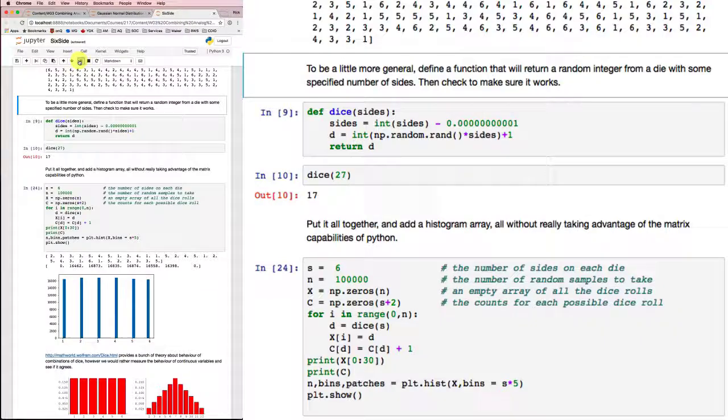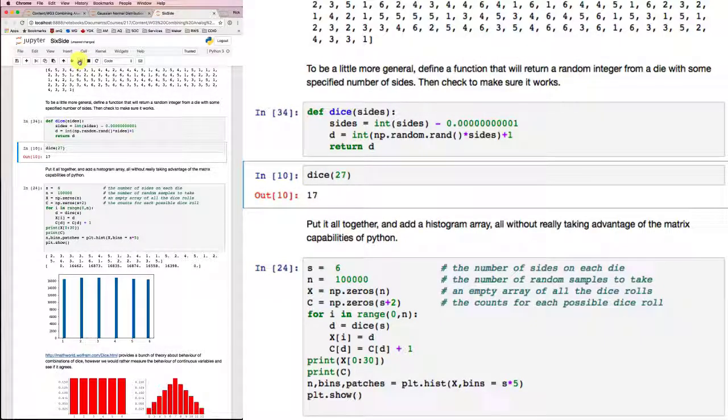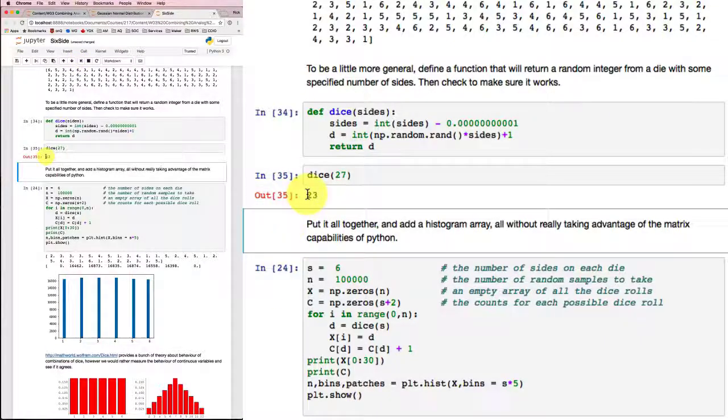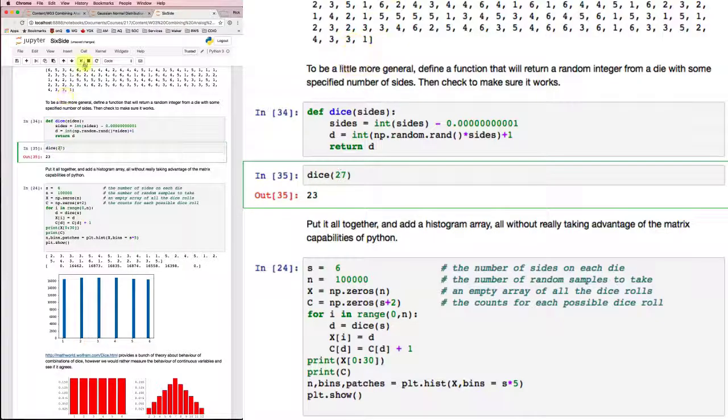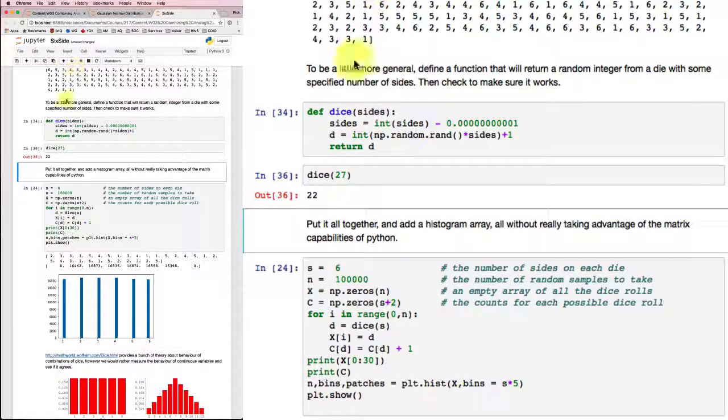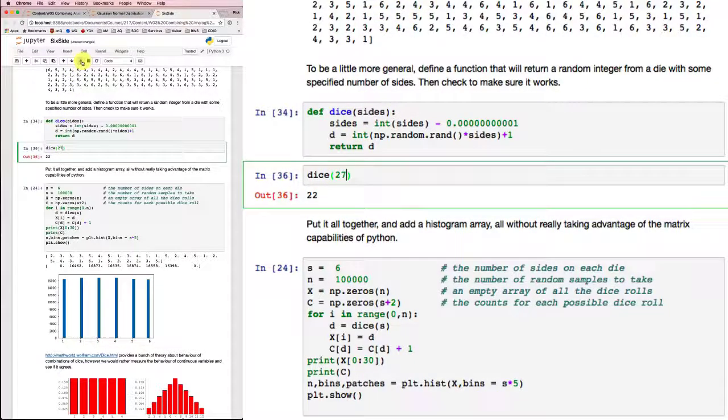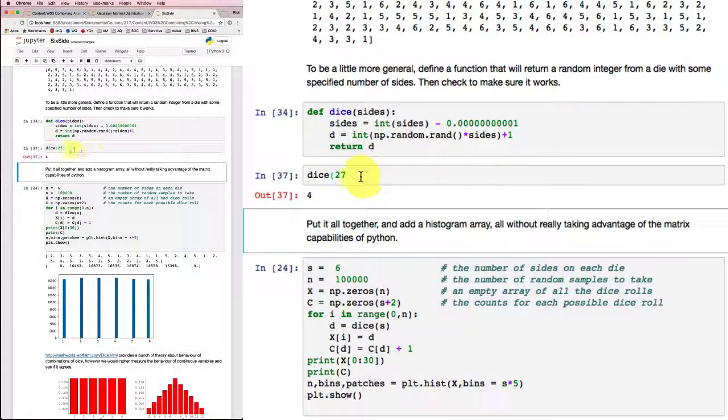So if I run that, for instance, if I roll a 27-sided die, and I'm not sure I could find one, but we could try it out, I get 23 as an output. If I try it again, 22, that doesn't seem random. Try it again, I get 4. I guess if I did it enough times, it would probably be random.